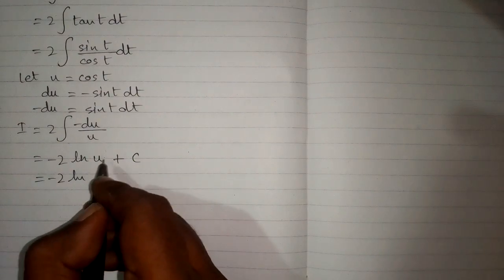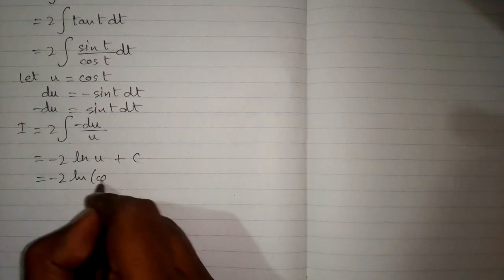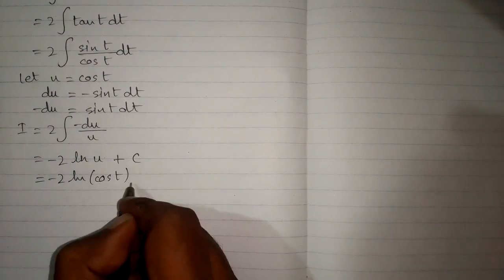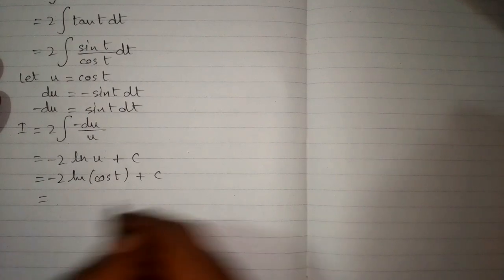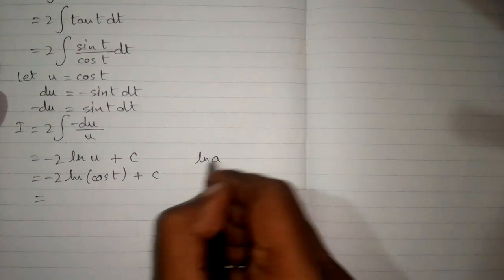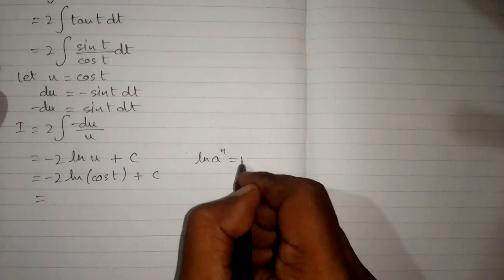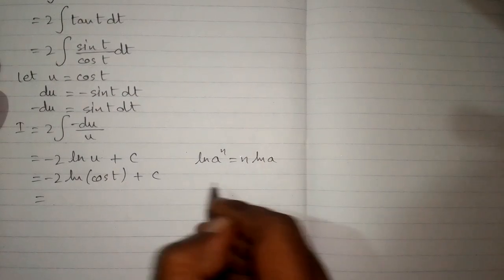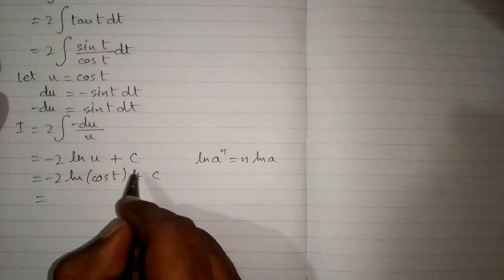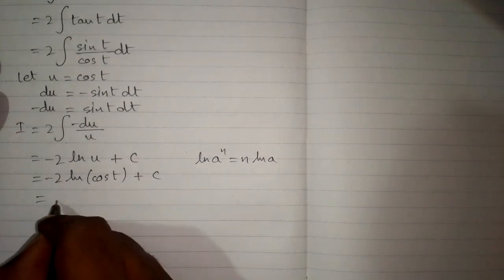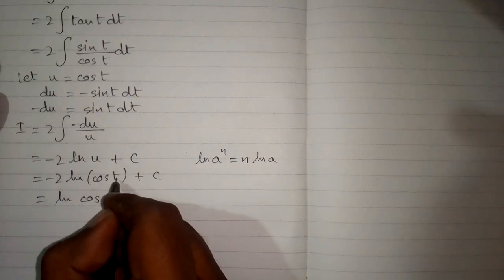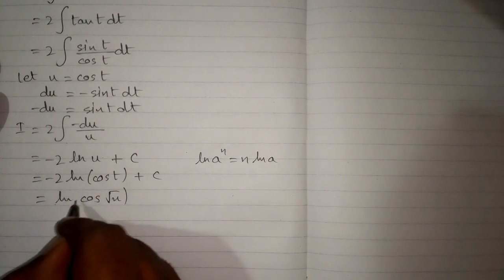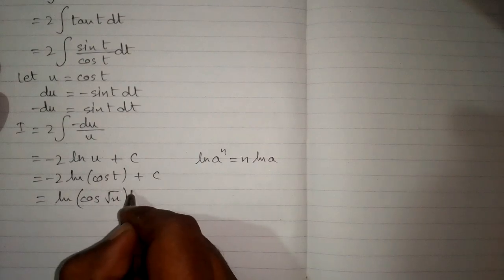Now we substitute back the value of u, which is cosine of t, and then the value of t, which is square root of x. We apply the rule that ln of a to the power n equals n times ln of a. So this minus 2 will become the power of cosine: we write cosine of square root of x raised to the power minus 2.